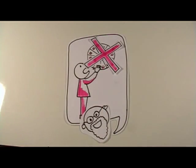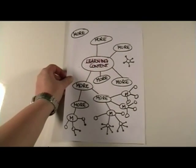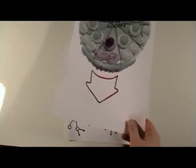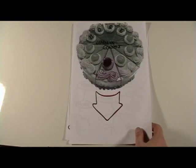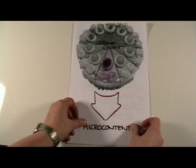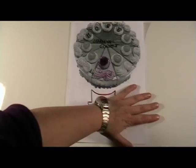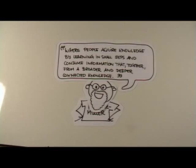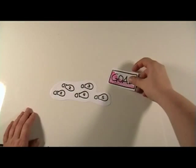It is nearly the same with micro-learning. We have a great reservoir of learning content, which is huge. But most learning content is made up of smaller elements. These smaller pieces are the so-called micro-content. So, micro-learning describes a process where people acquire knowledge by learning in small steps and consume information that, together, forms a broader and deeper connected knowledge.